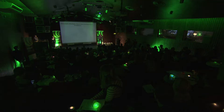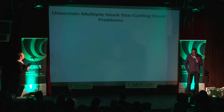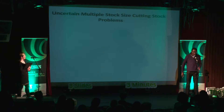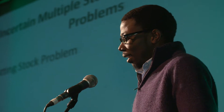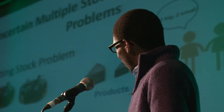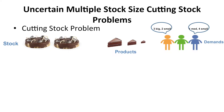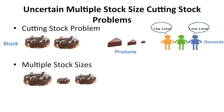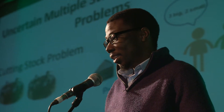The uncertain multiple stock size cutting stock problem is a bit of a mouthful, so let me break it down step by step. First, the cutting stock problem: you've got some stock raw material which you need to cut into products to satisfy demand. In this example, cakes are our stock — the whole cakes are the stock, and the products are big, medium, and small slices, and we've got demands for those slices.